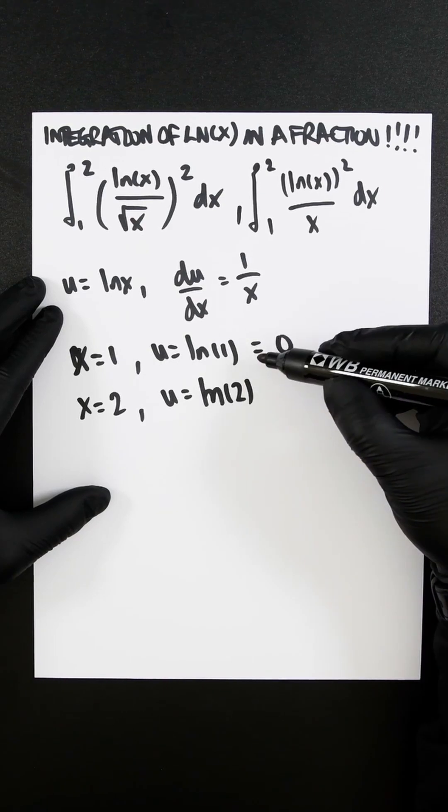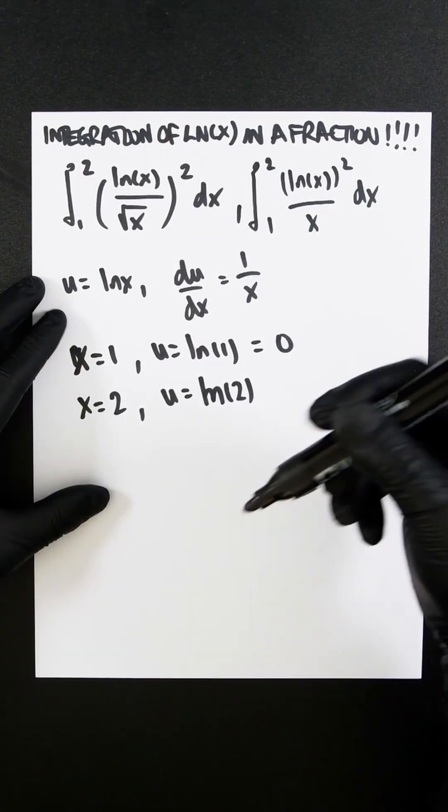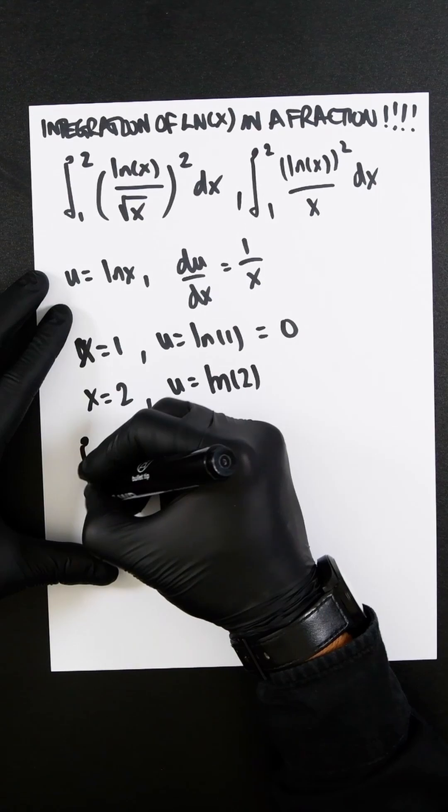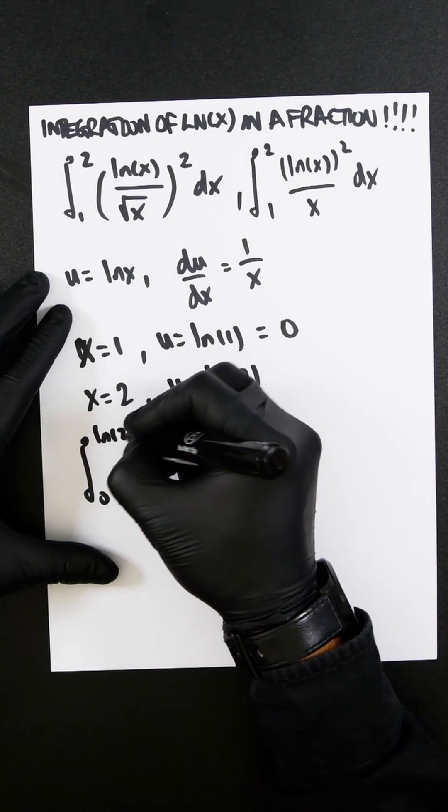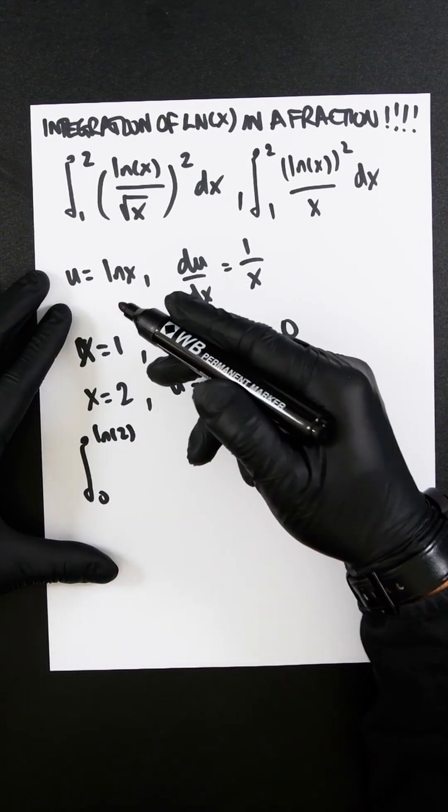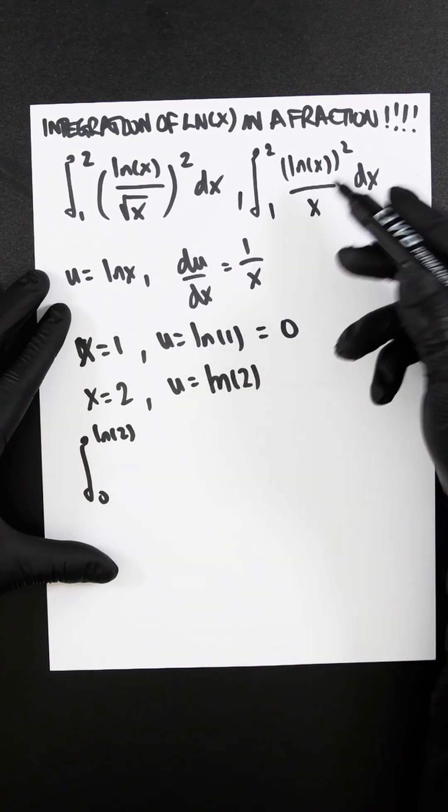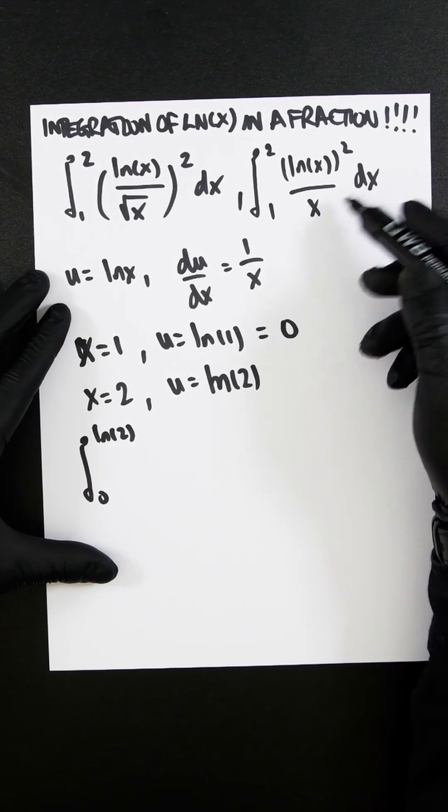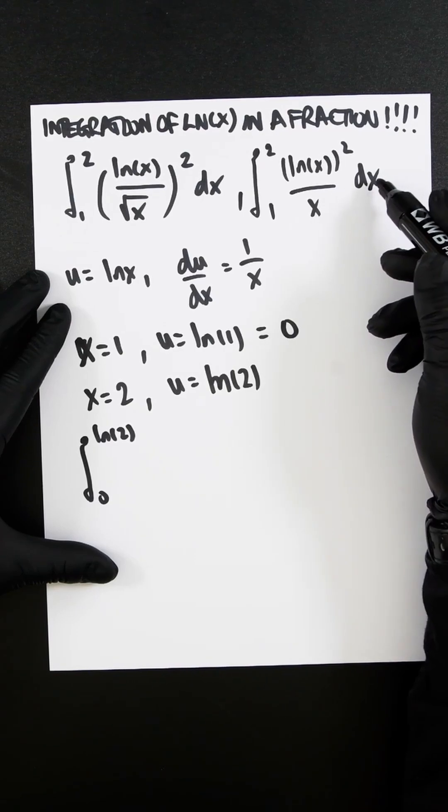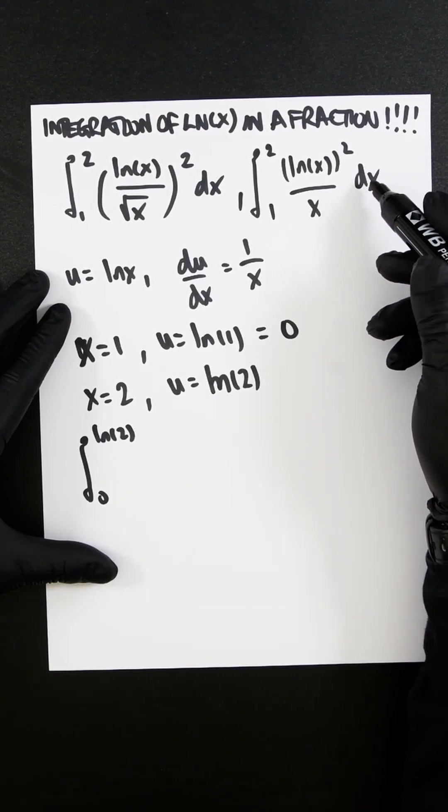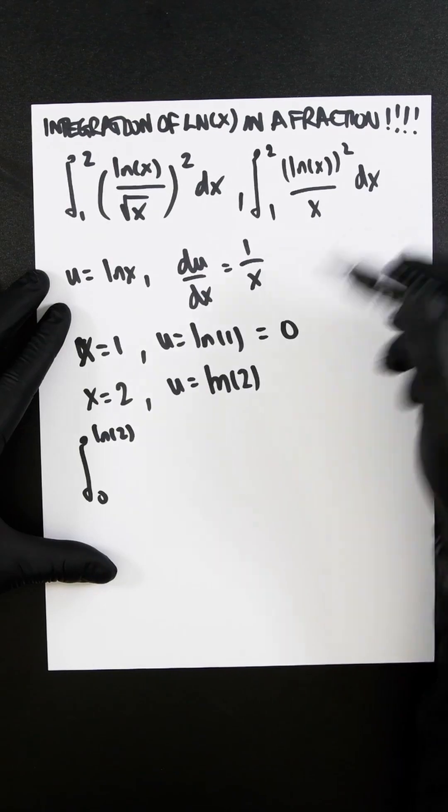So we've got these new parameters that we can now slap in because we've now subbed for u. So you've got an integral of 0 to ln 2, and we can substitute in for u squared. And we've got our du dx, which we can then substitute in here because we need to change the parameter from dx into du's. So once we've subbed everything in,